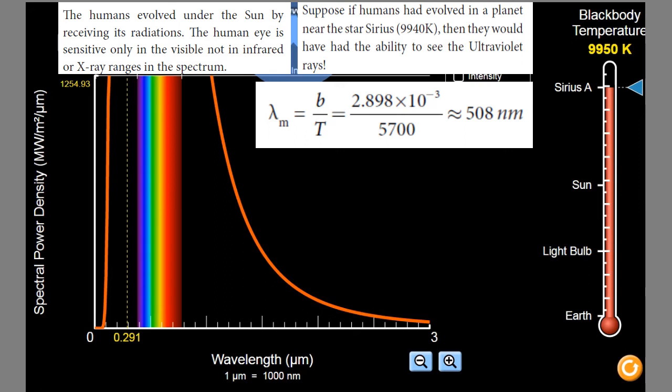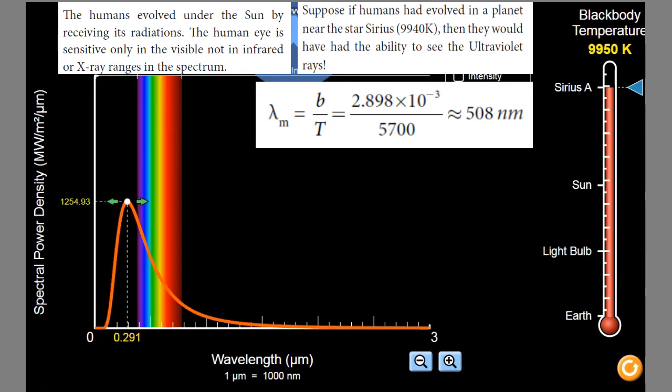Look at the wavelength. 0.291 micrometer means, that is equal to, which one? Ultraviolet radiation. Look at the peak portion of the graph. The maximum intensity of the radiation which is emitted in which region? Ultraviolet radiations. So, from the Sirius star, which radiation is emitted with greater intensity? Sirius. Ultraviolet radiations are emitted from the star.